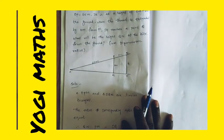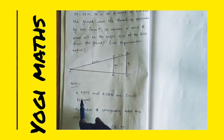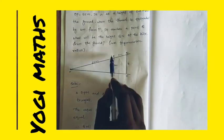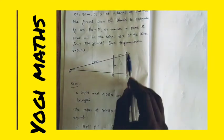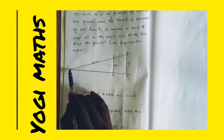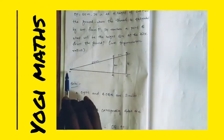First, triangle OPM and triangle OQN are similar triangles. OPM and OQN are similar.